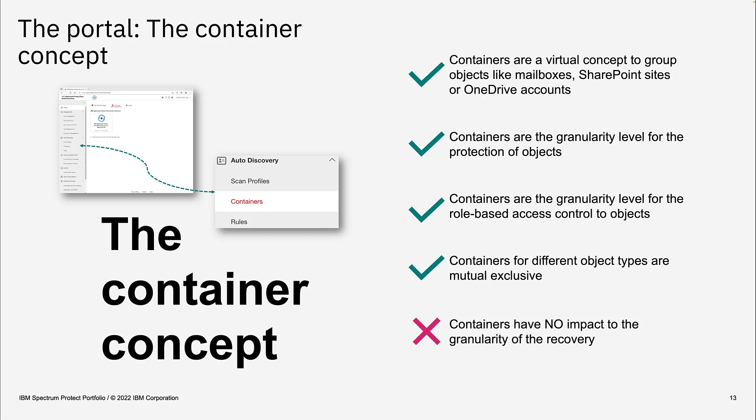This department container allows a granular level of role-based access control. You could define a persona in Spectrum Protect Plus Online Services that has access only to this one department container for recovery. With that, you can implement a near self-service recovery model — the customer does not need a global help desk doing all recovery, but can split responsibilities to smaller groups, assigning one user per department the role to recover that department's mailboxes.